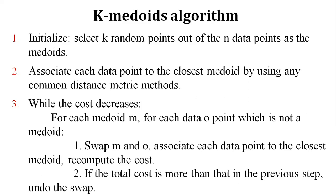There is an important concept called cost in K-Medoids. While the cost decreases for each medoid m — where k is the number of clusters, n is the number of data points, and m represents a medoid — for each non-medoid data point o (an object), swap m and o, associate each data point to the closest medoid, and recompute the cost. If the total cost is greater than the previous step, undo the swap.